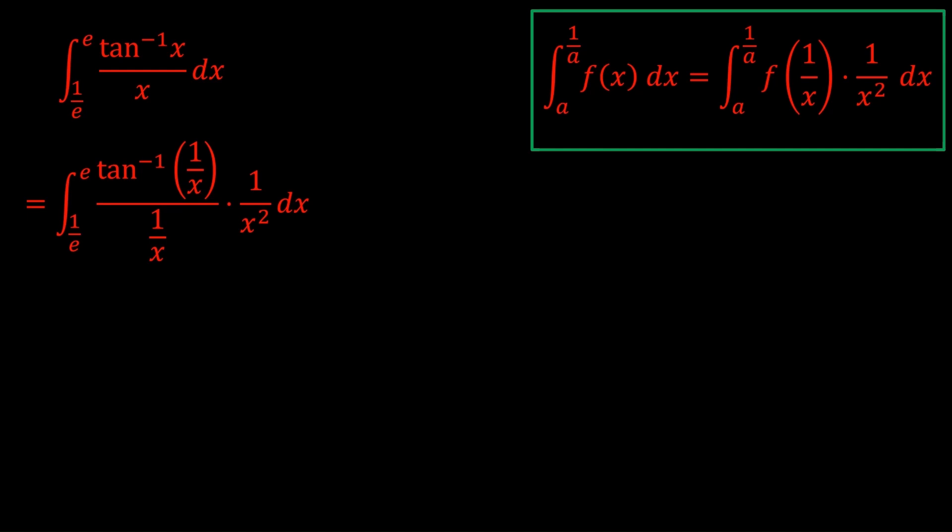And now we just clean things up. And we have two different forms of the same integral. So we add them together and divide by 2 using the first trick. But then what do we do now?